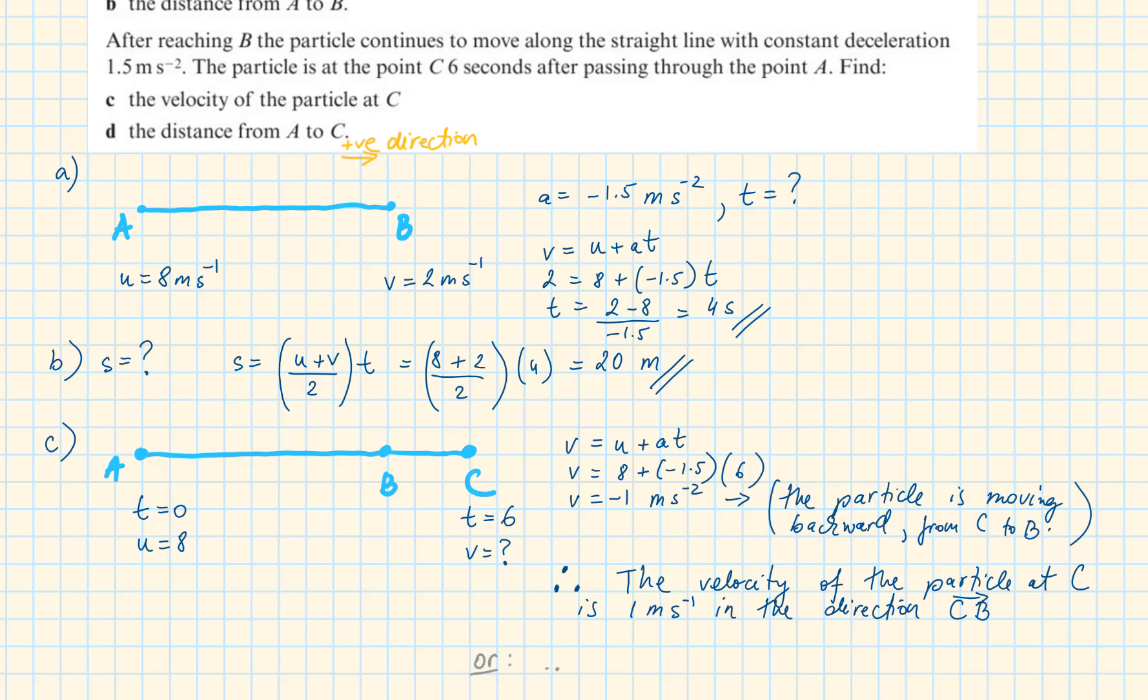The velocity of the particle at C is 1 meter per second in the direction C to B. We could also write this as the velocity of the particle at C is minus 1 meter per second in the direction B to C. Notice the vector notation on top of the BC and CB.